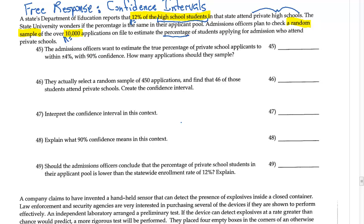The admissions officers want to estimate the true percentage of private school applicants to within 4% with 90% confidence. How many applications should they sample? This is actually an algebra problem.